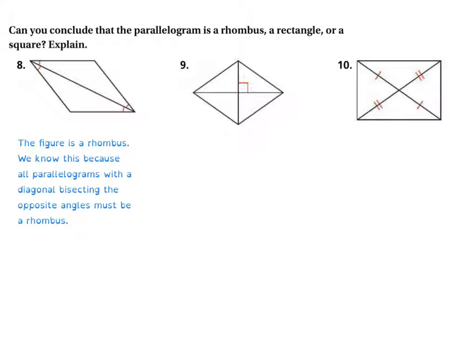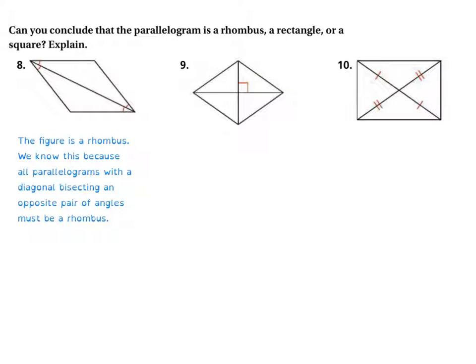So then the figure is a rhombus. We know this because all parallelograms with a diagonal bisecting an opposite pair of angles must be a rhombus. Number 9.